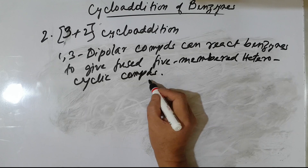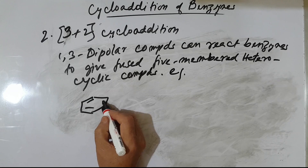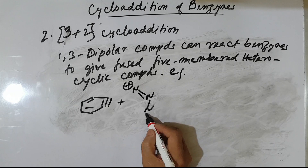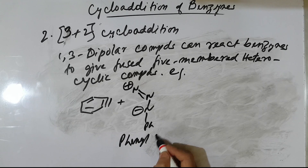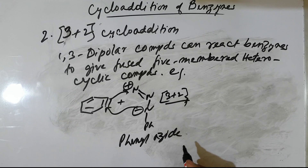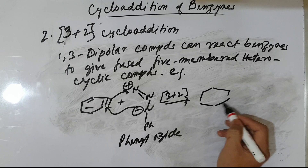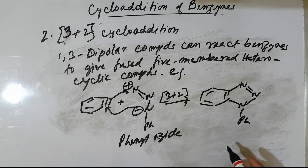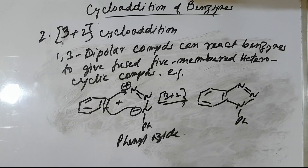For example, phenyl azide reacts with benzyne. Then we have benzyne plus phenyl azide — phenyl azide reacts with benzyne. This is a 3+2 cycloaddition. The product is a 6-membered ring fused with a 5-membered ring. You can call it 1-phenylbenzotriazole.